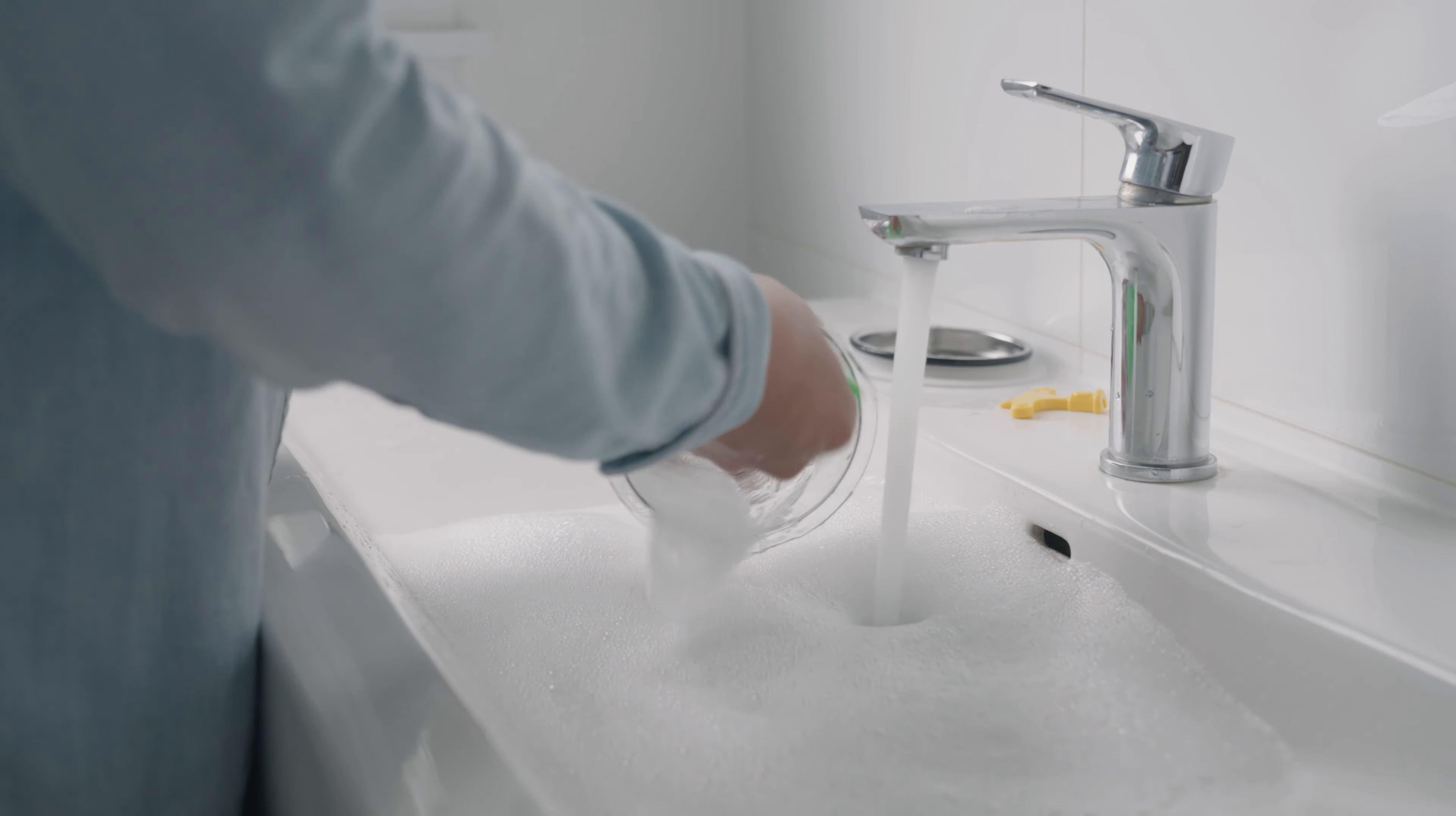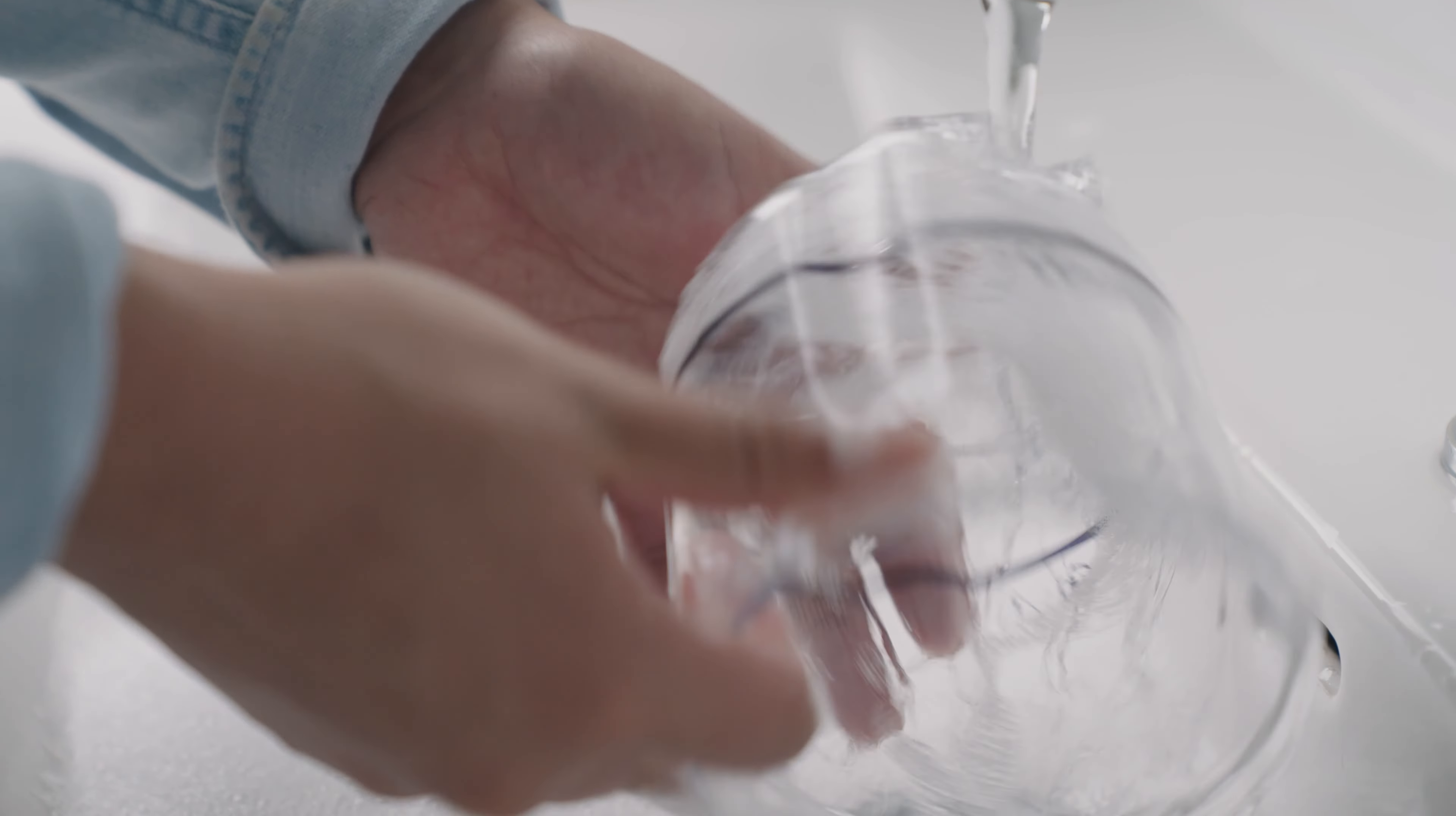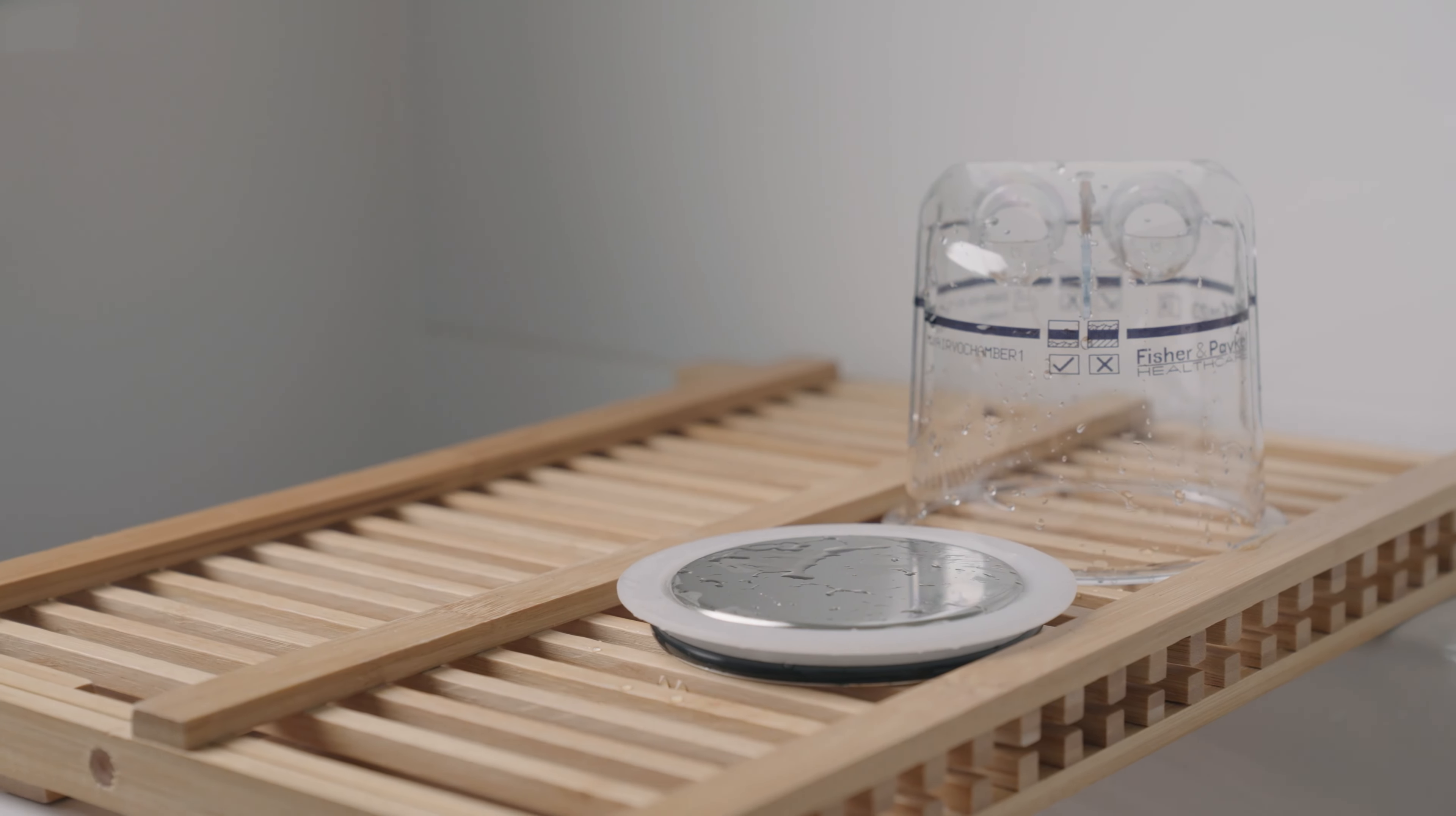Hand wash the chamber parts in warm water with a mild dishwashing detergent. Then rinse the chamber parts thoroughly in fresh water, ensuring the soap residue is removed. Leave the parts out to dry, being careful to avoid direct sunlight or heat.